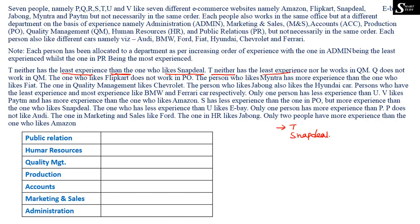T neither has the least experience — meaning T cannot be in the Administration department — nor does T work in Quality Management. So T should not be placed in either Admin or QM. Also, Q does not work in Quality Management, so neither Q nor T works in Quality Management.